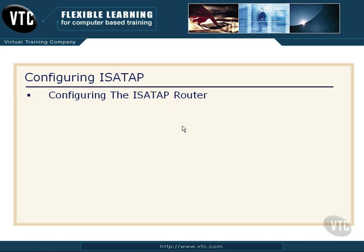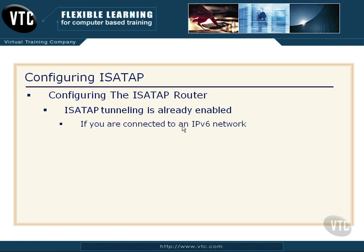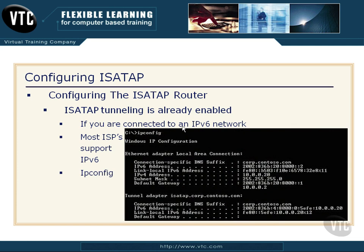First of all, we need to configure the server as a router, but understand that ISATAP tunneling is already enabled on that server. Now if you're connected to an IPv6 network and you haven't done anything to disable IPv6 on the machine, it's going to be pretty obvious. Most ISPs at this point support IPv6, and if you just run a simple ipconfig command, you're going to see something very similar to this. Notice we did ipconfig and it's automatically reading some things about my Active Directory settings, but I can see here the IP address for my machine.